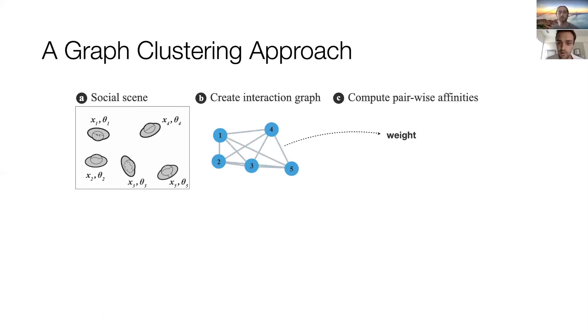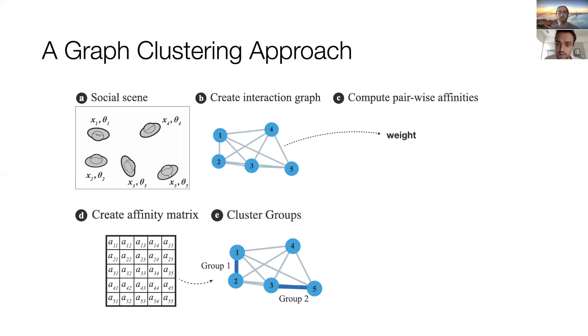This scene is modeled as a complete edge-weighted graph, where nodes correspond to participants, and each edge between two nodes corresponds to the affinity between those nodes, which is the probability they are in a group. The weighted graph is then converted into a symmetric affinity matrix, where element ij is the affinity between person i and person j. A graph clustering algorithm is then used to cluster the groups according to their affinities into dominant sets, a generalization of maximal cliques to edge-weighted graphs.